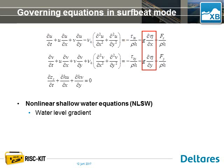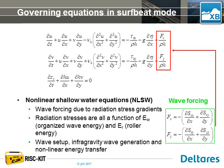We have the water level gradient as an important forcing term, and finally the wave forcing due to radiation stress gradients. The radiation stress gradients are a function of the wave energy and the roller energy, and they come from the wave module. These terms account for wave setup, infragravity wave generation, and nonlinear energy transfer from the short wave groups to the infragravity waves.